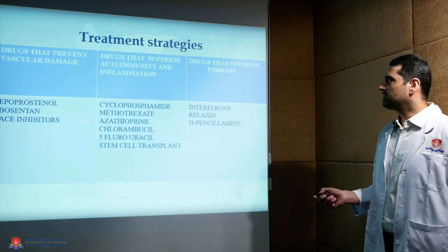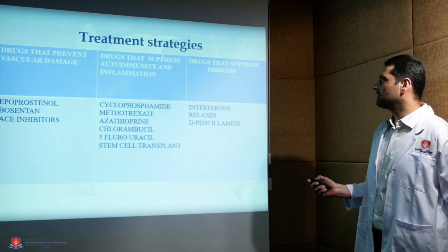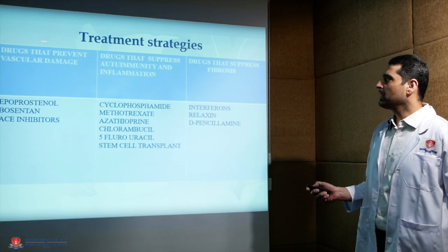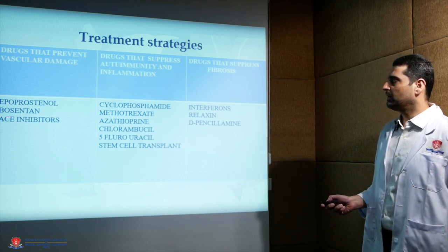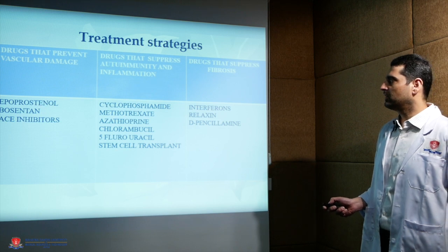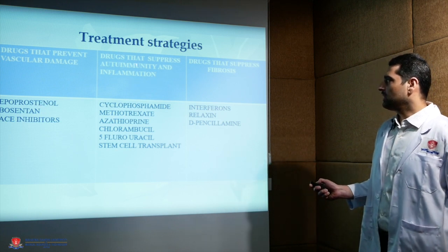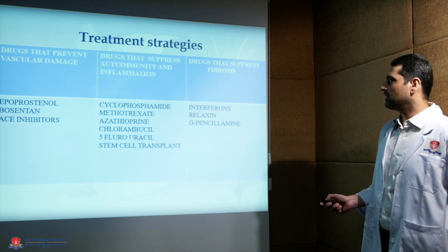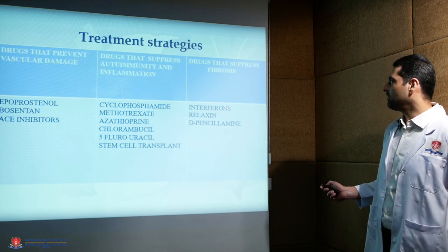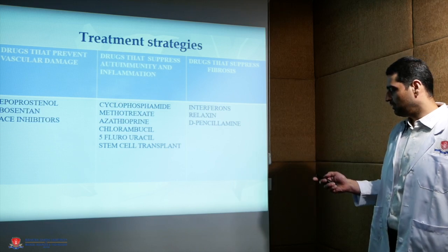Treatment-wise, the three pathways of pathogenesis must be targeted. First, vascular damage — where prostaglandin analogues, endothelin receptor antagonist bosentan, and ACE inhibitors are of paramount importance. To target immunity, immunosuppressant and immunomodulatory drugs can be used. To halt fibrosis, interferons, relaxin, and D-penicillamine can be used.